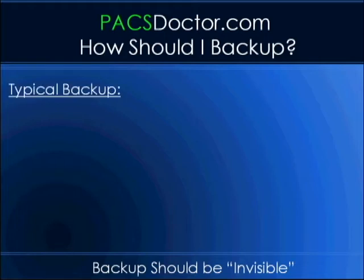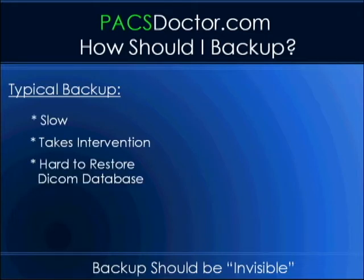Typical backup systems copy an entire computer's information. They may check for changes at set intervals and just copy those changes. A medical image archive can have millions of images. Copying all those images each time is impractical. Even checking for changes can be a long process, and data that arrives between backups can be lost.